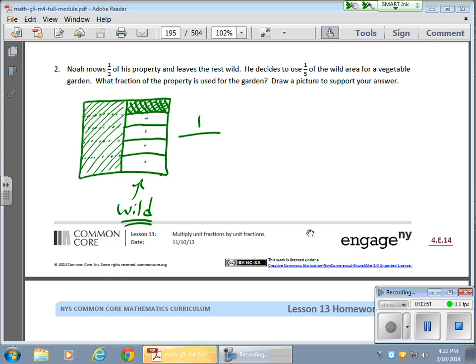So I have 1, 2, 3, 4, 5, 6, 7, 8, 9, and 10. So he's going to use 1 tenth of the area of the property for a vegetable garden.